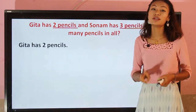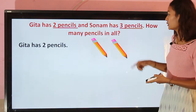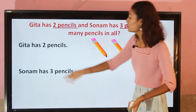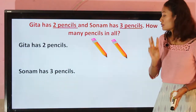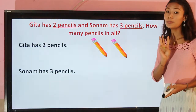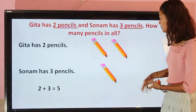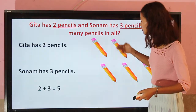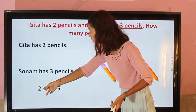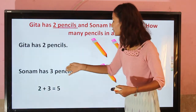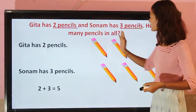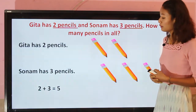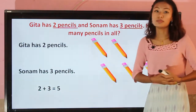First, let's draw two pencils for Gita — one, two. Now Sonam has three pencils, so let's draw three pencils — one, two, three. You can see two plus three. Now let's count all these objects together: one, two, three, four, five. While adding two with three, our total will be five.